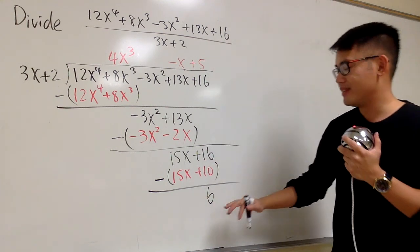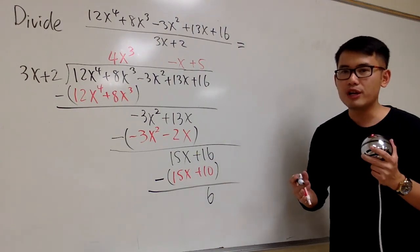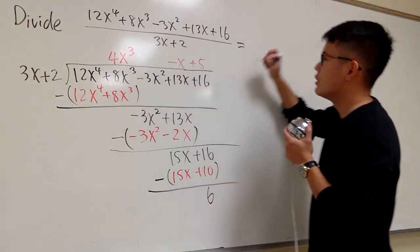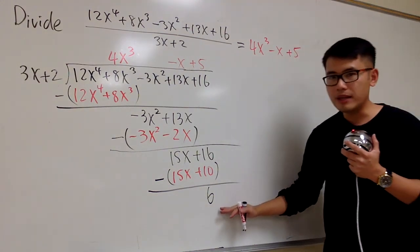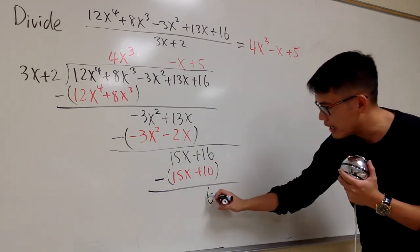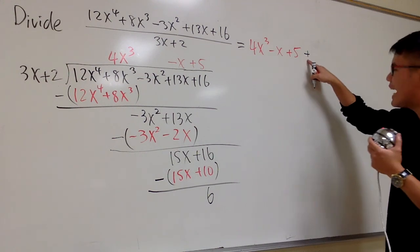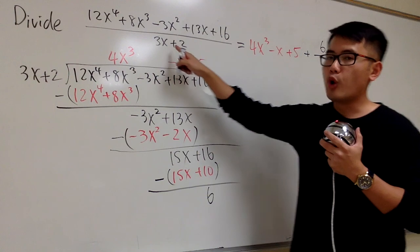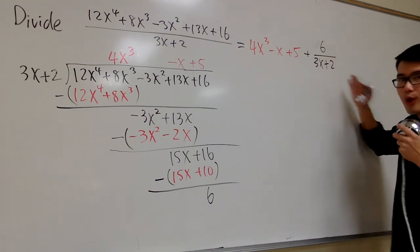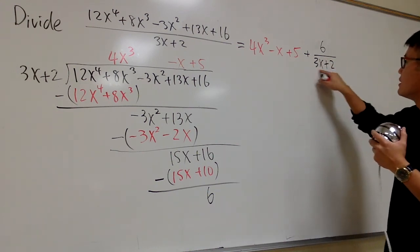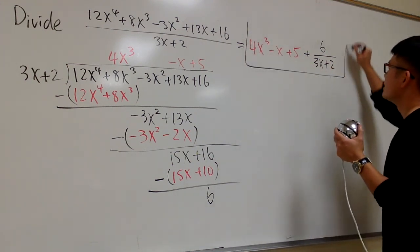We are done. The 6 is the remainder — this is the most that we can do. At the very end, we write down our answer as a mixed expression. The polynomial part is 4x to the 3rd power minus x plus 5. Then we add the remainder part: positive 6 over the original denominator, 3x plus 2. Be sure we cannot cancel anything here — do not reduce the 3 and the 6, because 3x plus 2 is a factor by itself. This right here is the final answer.